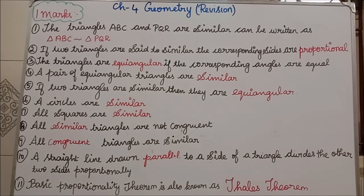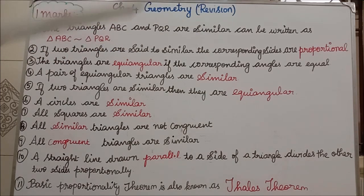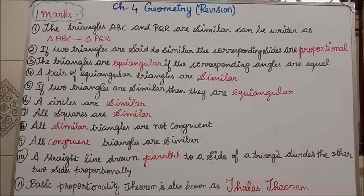Third one: the triangles are equiangular if the corresponding angles are equal. The triangles are equiangular — equiangular means it will have the same angle. Then the corresponding angles are equal.